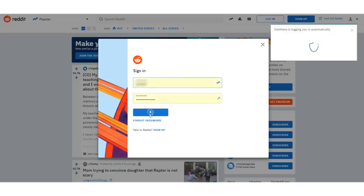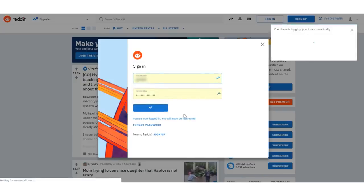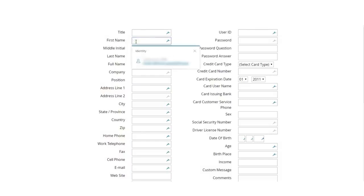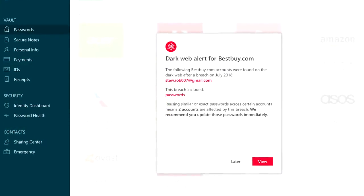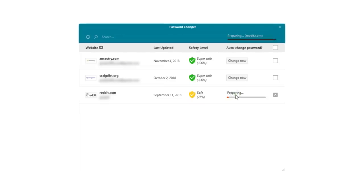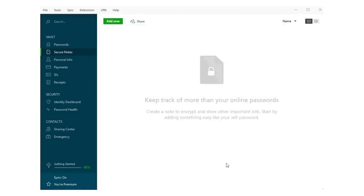Dashlane simplifies online security and password management by seamlessly integrating into your browser and syncing between any kind of device automatically. And it's more than just a password manager. Dashlane warns you if stolen personal information is found in a data breach, can help you change passwords without going through a maze of web page settings, and has dark web monitoring and a VPN.